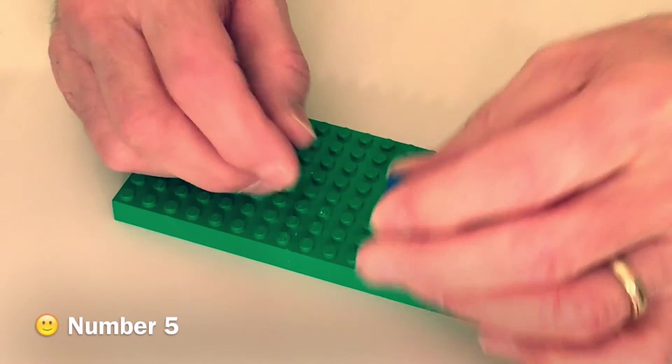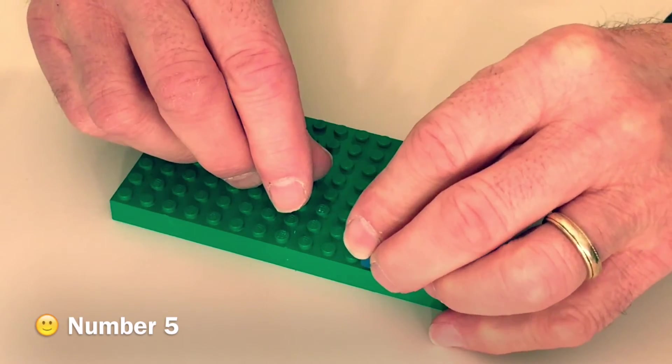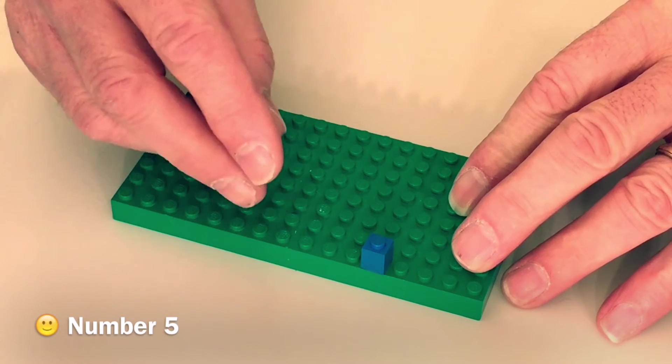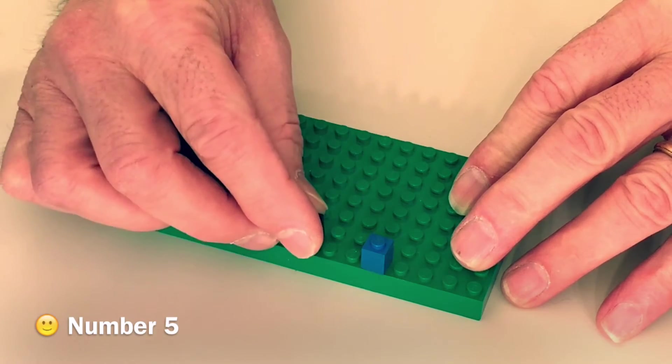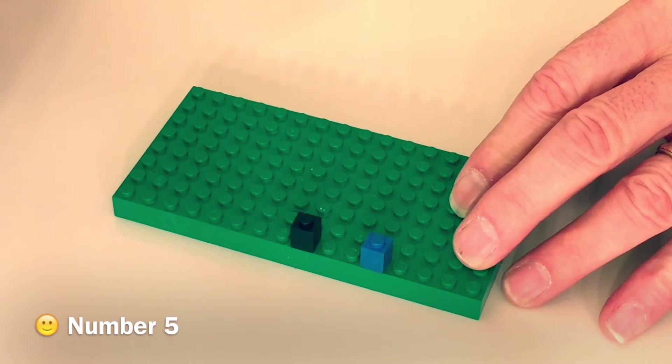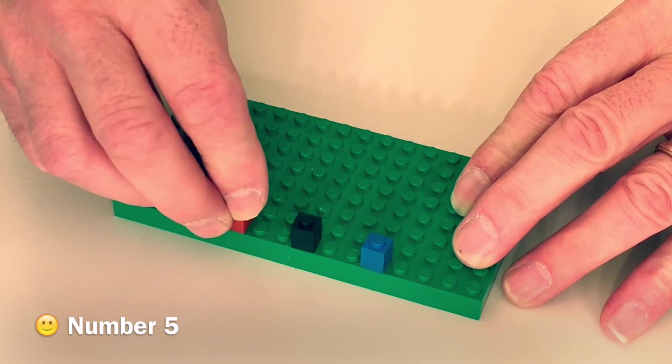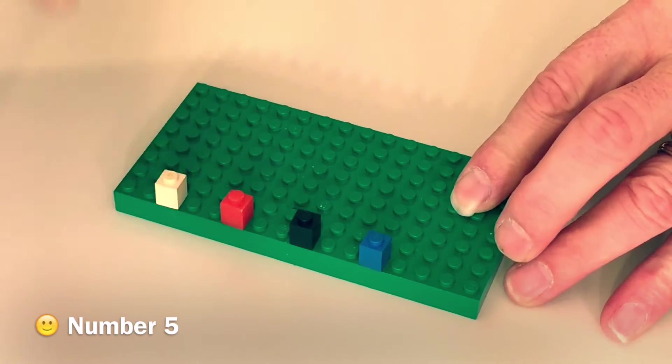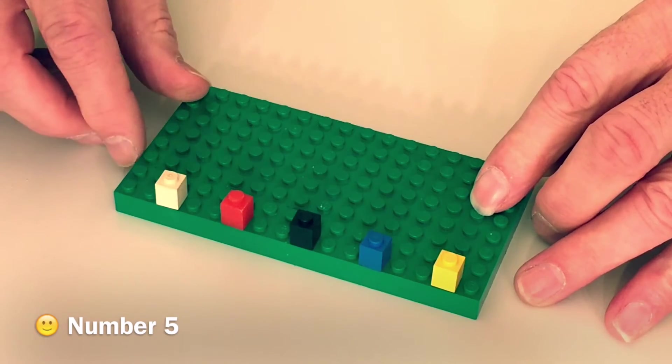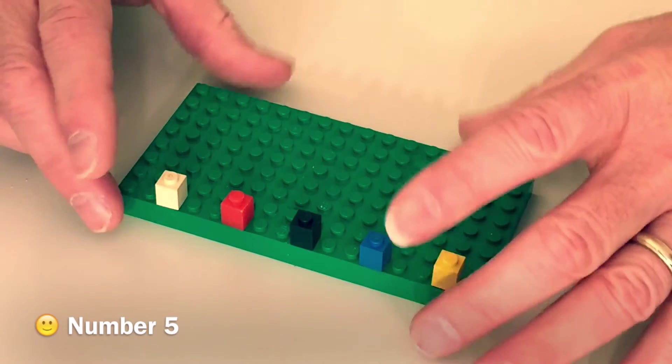So we're going to count out five one-dot blocks. This has one dot on the top of it, so that's a one-dot block. So we're going to count out five of them: one, two, three, four, and five. Now we have five one-dot blocks.